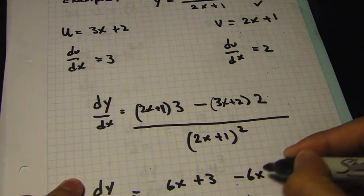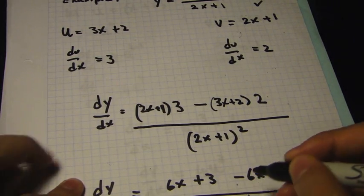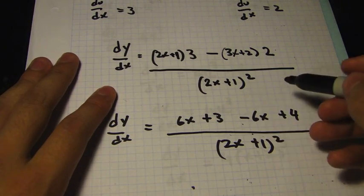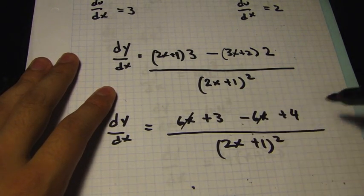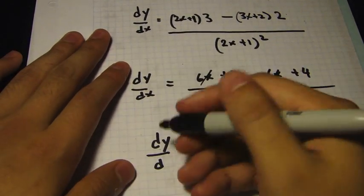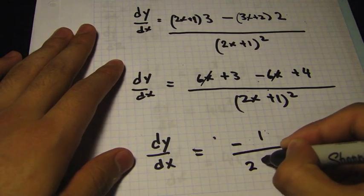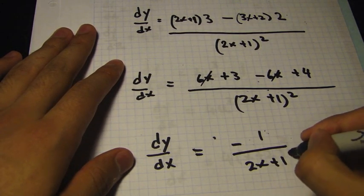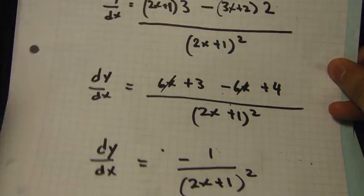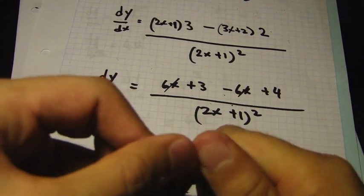Simplifying, 6x minus 6x cancels out, and 3 minus 4 gives minus 1. So the final answer is dy/dx equals minus 1 over (2x + 1) squared. That was just a quick review of the chain rule, product rule, and the quotient rule.